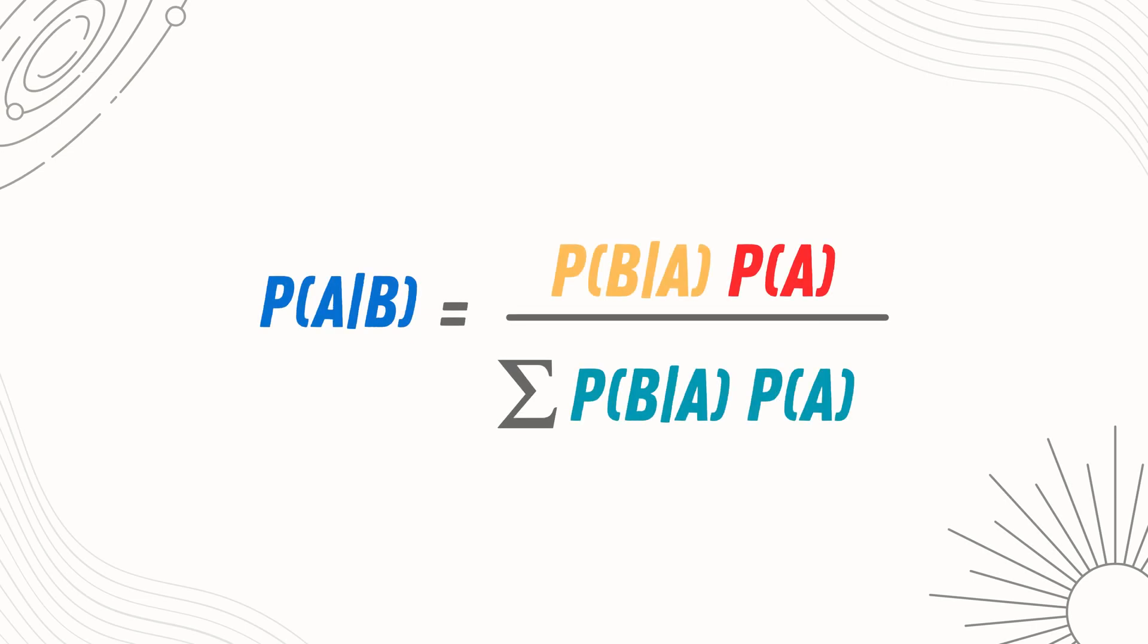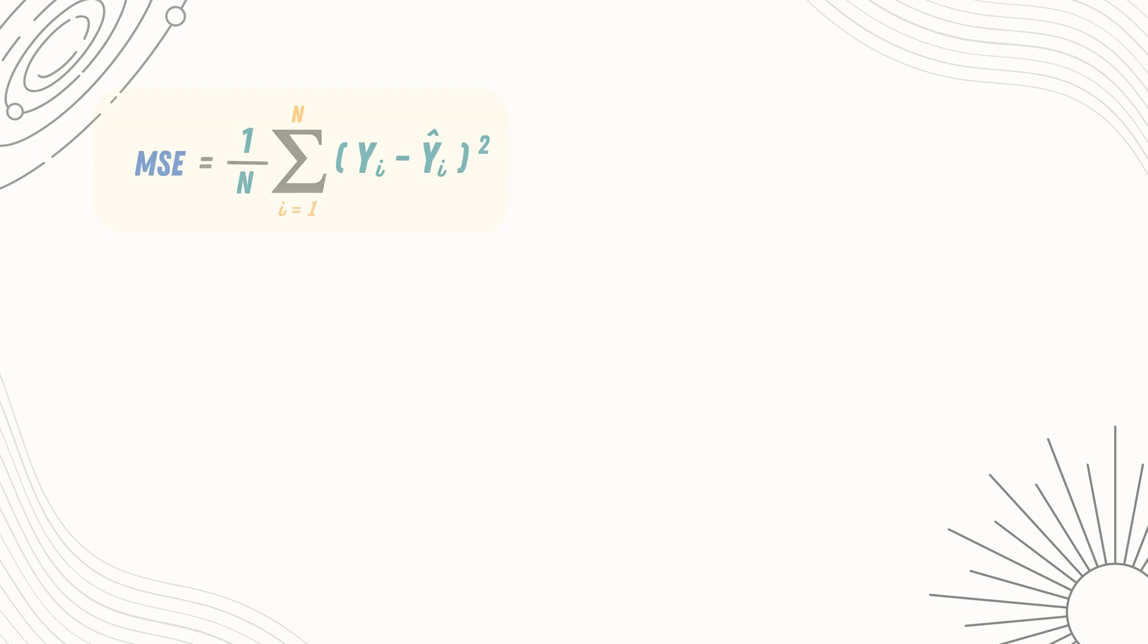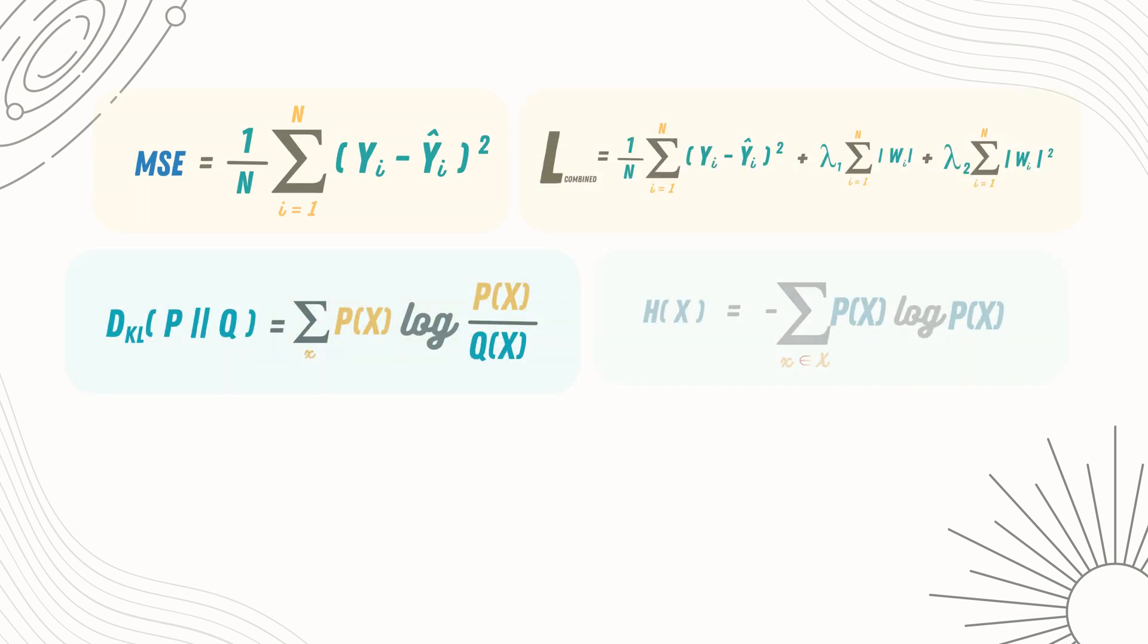Just for completeness, this is the general form of the Bayes' theorem. So, these five functions, loss function, regularization, KL divergence, entropy, and Bayes' theorem, are the backbone of many machine learning, physics, and maths papers.